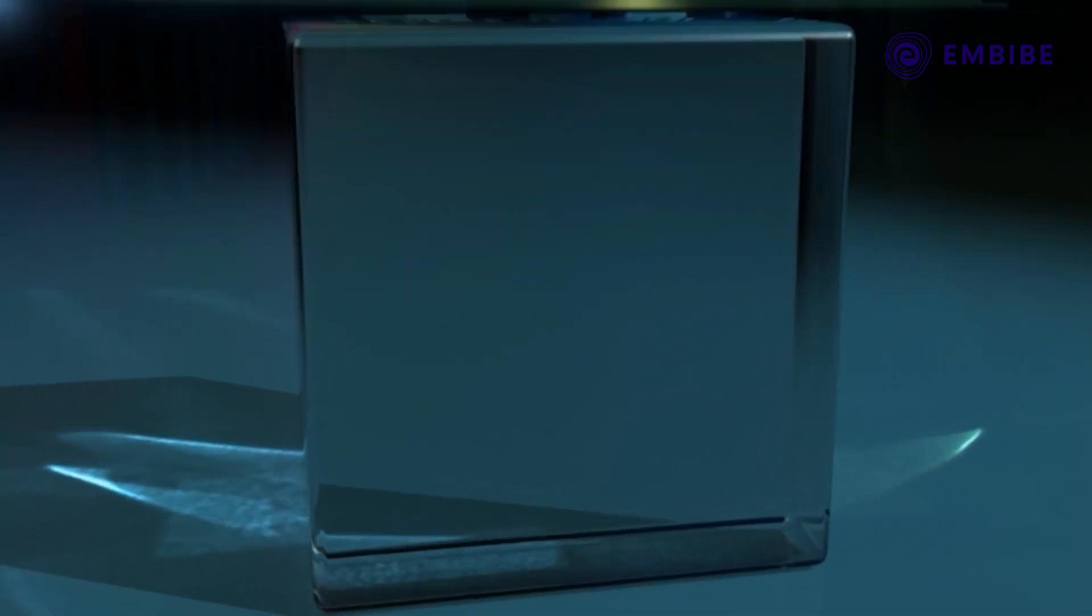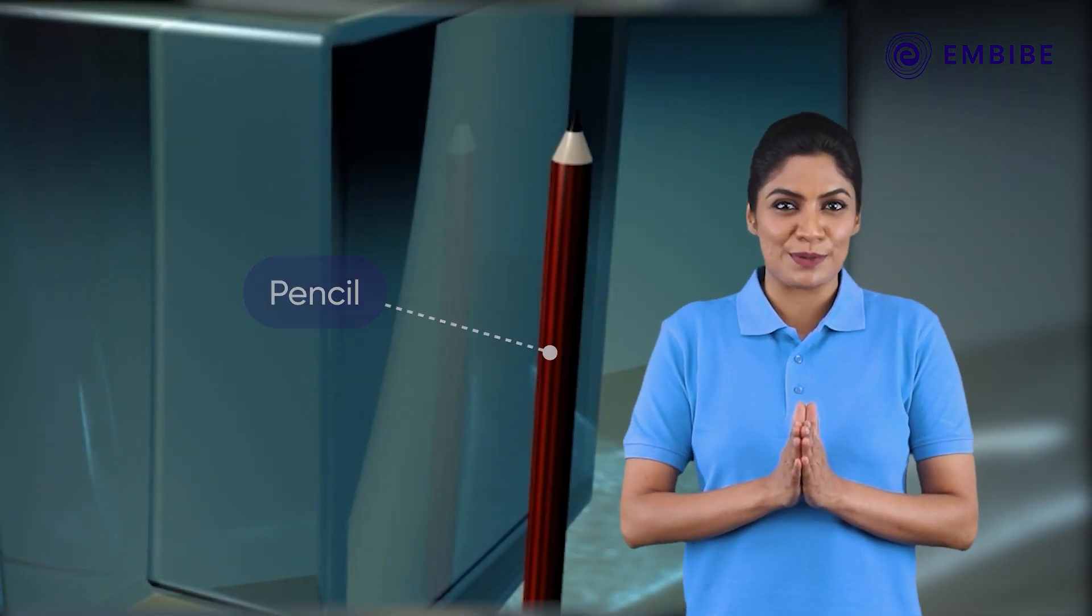Take a rectangular glass slab and place it on a table. Fix an erect pencil behind the glass slab. Observe the pencil at an angle from the other side of the glass slab.